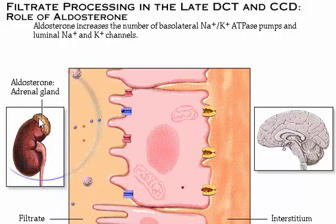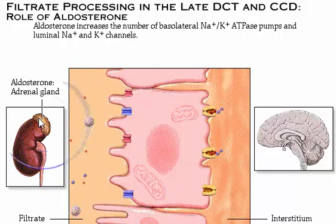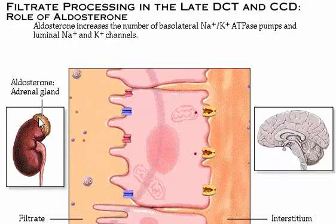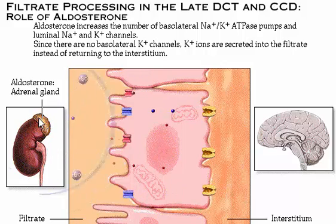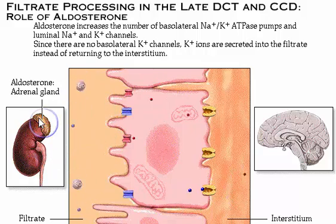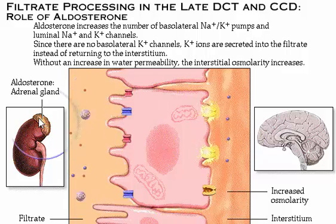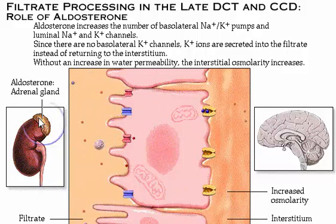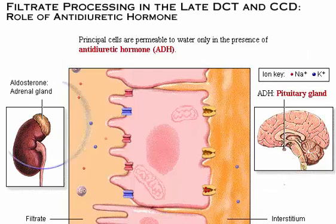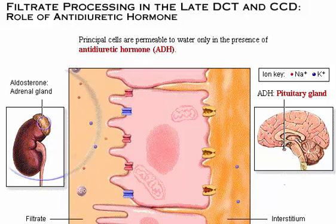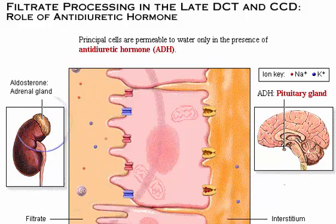This occurs because the principal cells increase the number and activity of sodium-potassium pumps in the basolateral membrane. The number of sodium and potassium channels in the luminal membrane is also increased. Notice the absence of potassium channels in the basolateral membrane. Potassium ions enter the cell through the basolateral membrane, but instead of diffusing back into the interstitium, they diffuse to the luminal membrane and are secreted into the filtrate. Also notice the resulting increase in interstitial osmolarity. Water is not following the solute because the luminal membrane is relatively impermeable to water unless it is stimulated by ADH. Under most normal conditions, an increase in aldosterone occurs along with an increase in antidiuretic hormone, and the reabsorption of salt is usually coupled with reabsorption of water, although they can occur independently. The cell shown here has been stimulated only by aldosterone, so it is still impermeable to water.